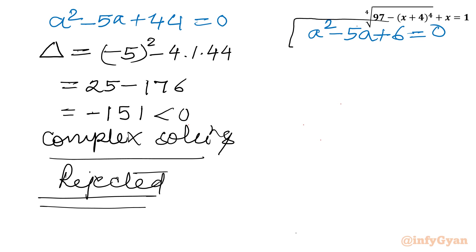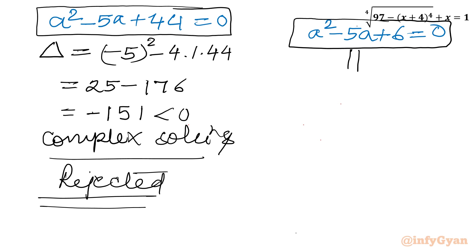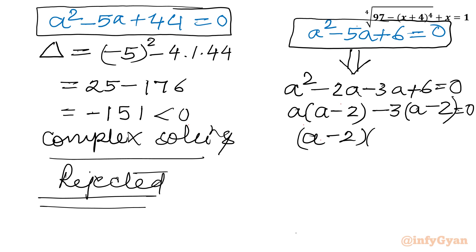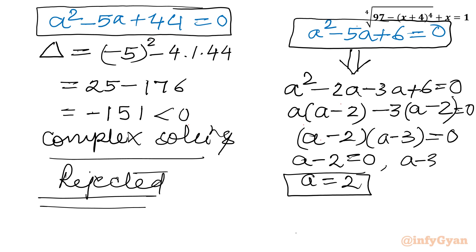Now for the second quadratic equation A squared minus 5A plus 6 equal to 0, I'll use factorization. Factoring 6 as 2 times 3, I split the middle term as minus 2A minus 3A. Taking A as common from the first two terms gives A(A minus 2), and minus 3 common from the last gives minus 3(A minus 2). So (A minus 2)(A minus 3) equal to 0, giving A equal to 2 or A equal to 3.